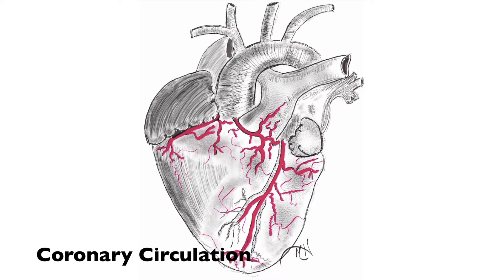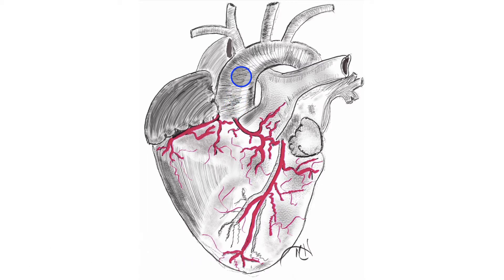The goal of this lecture is to talk about the coronary circulation. Here we're looking at the heart; the vessels in red are the coronary arteries which are providing oxygen-rich blood to the myocardium. As we've talked about previously, these coronary arteries depart the aorta at the base of the aorta. Blood is ejected from the left ventricle into the aorta which then proceeds to follow different paths.